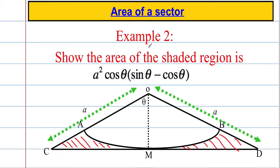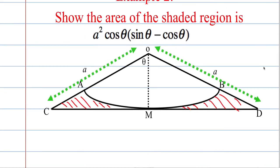Now we're going to look at a fairly meaty question where we're asked to show that the area of the shaded region is a squared cosine theta times (sine theta minus cosine theta). It looks like a bit of a horrific question, but if we think about what we've just done: if I was able to calculate the area of this triangle here and calculate the area of the sector, and take the area of the sector away from the area of the triangle, I should get this expression. So let's work towards calculating the area of this triangle.